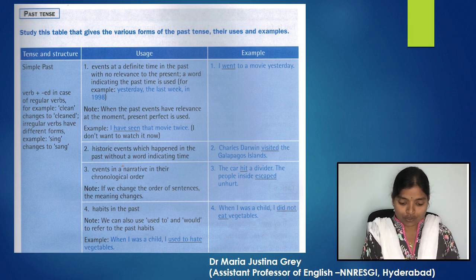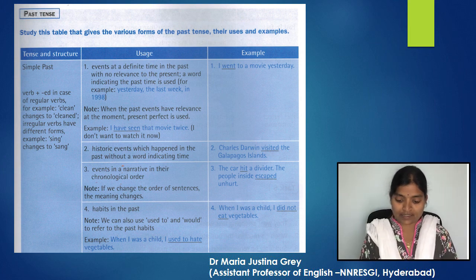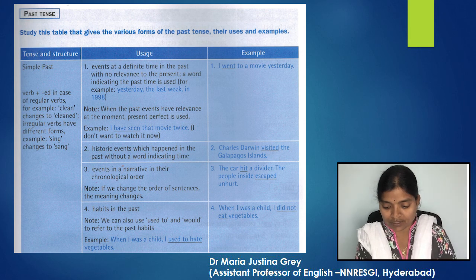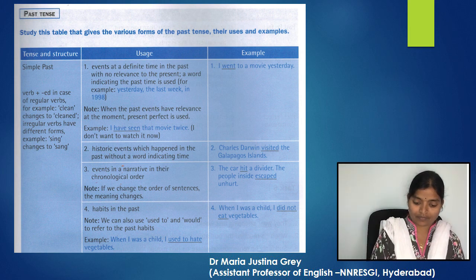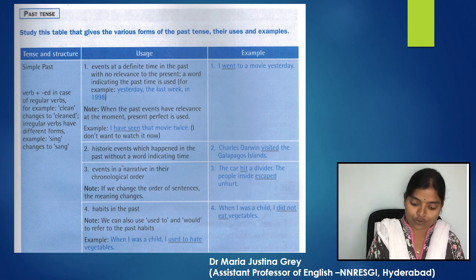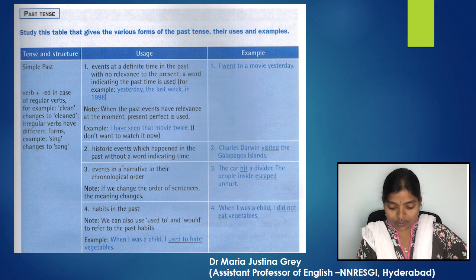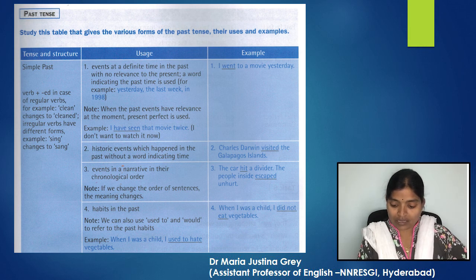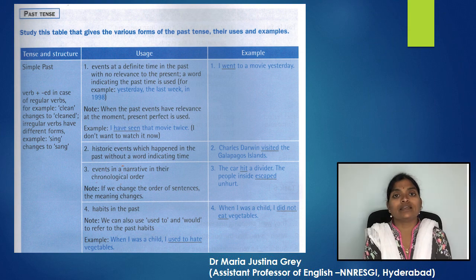Simple past is also used to talk about historic events which happened in the past without a word indicating time. For example, 'Charles Darwin visited the Galapagos Islands.' Simple past is also used to talk about events in a narrative in their chronological order. For example, 'The car hit a divider. The people inside escaped unharmed.' Note: if we change the order of sentences, the meaning changes.